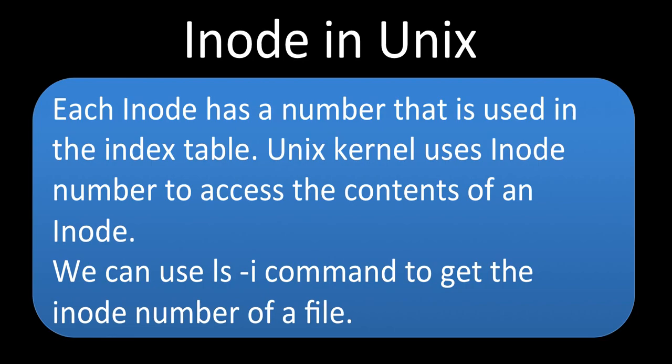Each inode has a number — a large number that is used in the index table. The index table maintains the list of all the inodes. The UNIX kernel uses the inode number to access the contents of an inode. If you give the inode number to the UNIX kernel, the kernel goes to the index table, gets the location of the inode, and retrieves all the contents of that inode.